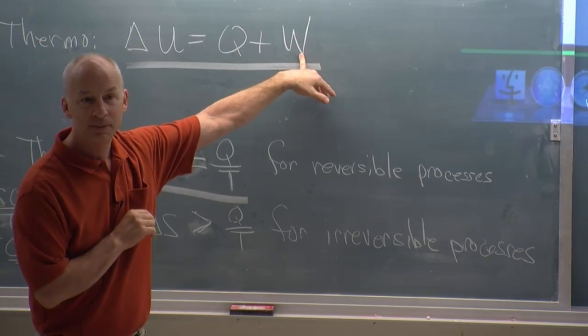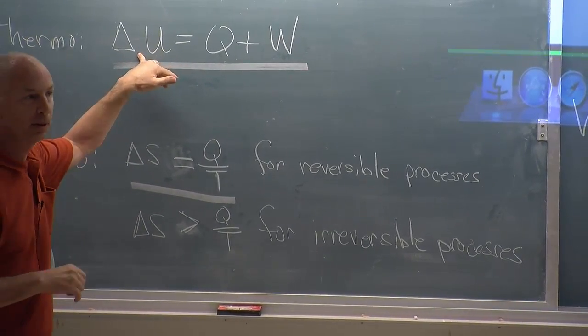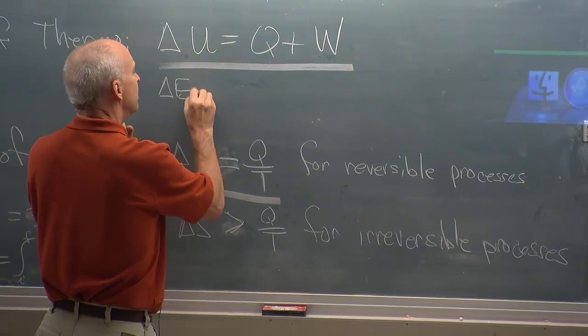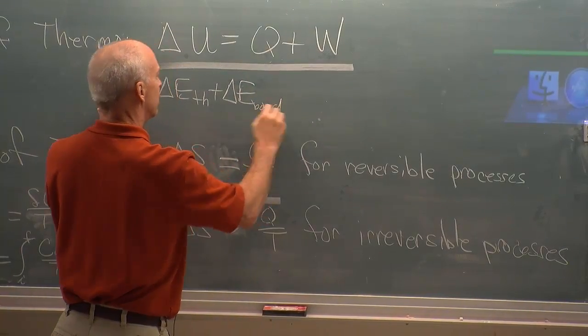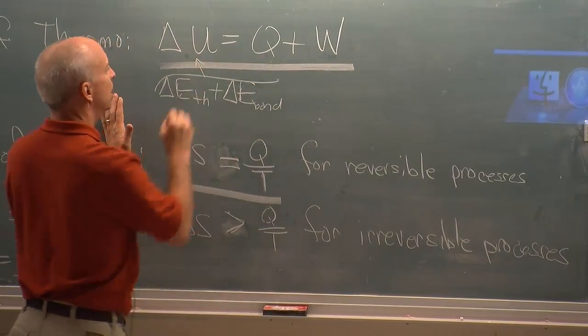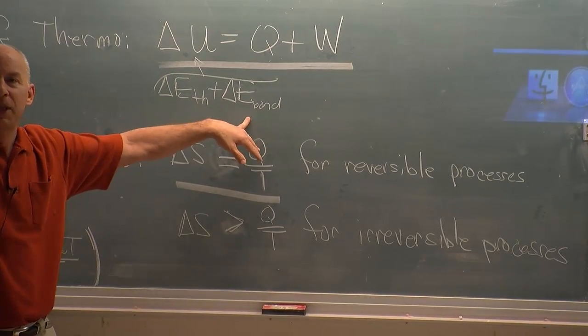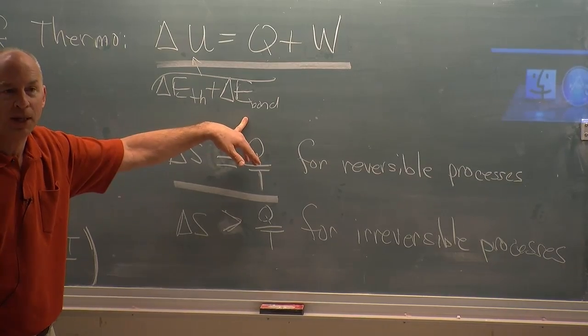W is negative, so delta U is negative. Internal energy, by the way, is primarily E-thermal and E-bond, but this is an ideal gas in both cases, so no bond energy changes.